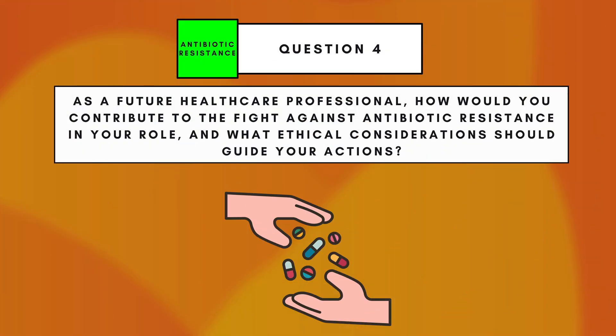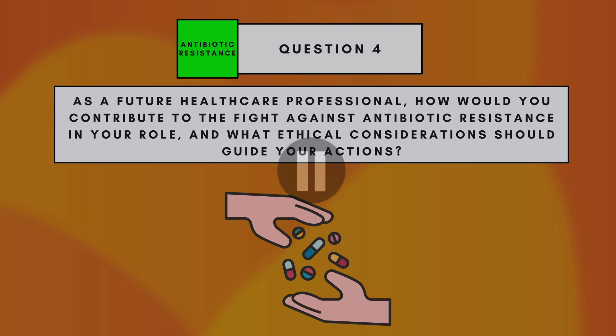Question four: How would you contribute to the fight against antibiotic resistance in your role, and what ethical considerations should guide your actions? This is a nice question to end on — similar to question three but emphasizing what you would do within your own role. Part of this answer is knowing your capacity. As an F1, F2, or registrar, this isn't the time to be investing at government level, so you need to say that you'll support these new programs and perhaps volunteer toward them, while acknowledging you won't be leading them anytime soon.